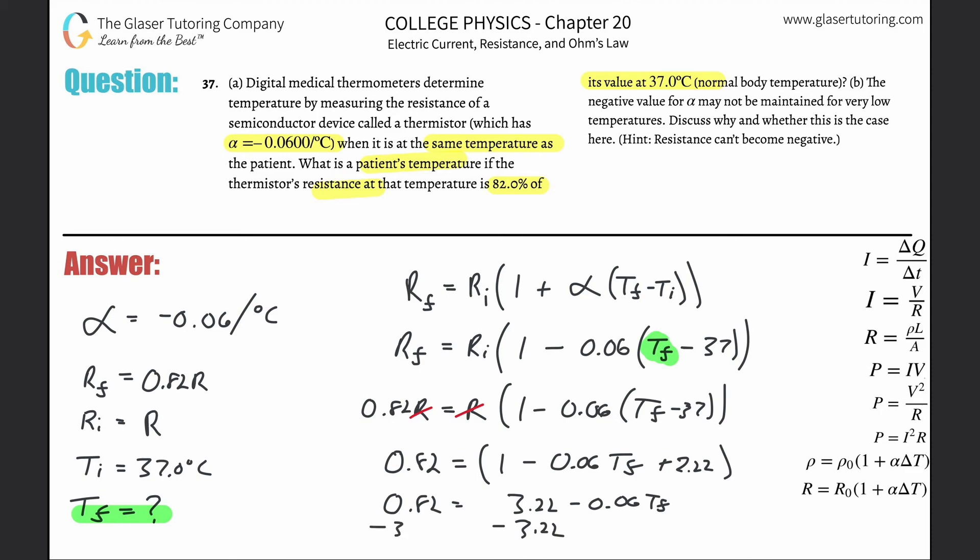We just got to solve for T_f. This is simple algebra now. Subtract that 3.22 on over, so we're going to get 0.82 minus 3.22, which is negative 2.4. I'm going to do the work up here on the top left, so this is negative 0.06T_f. I'm just bringing it up, and then divide it out. Divide by negative 0.06. It looks like I get a value of about 40. So the final temperature is about 40 degrees Celsius.